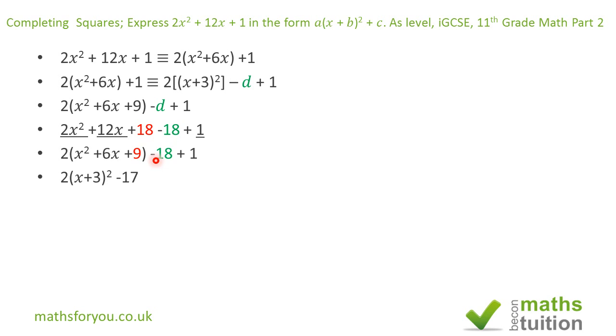Now minus 18 plus 1 is minus 17. So we now end up with a as 2, b as 3, and c as minus 17.